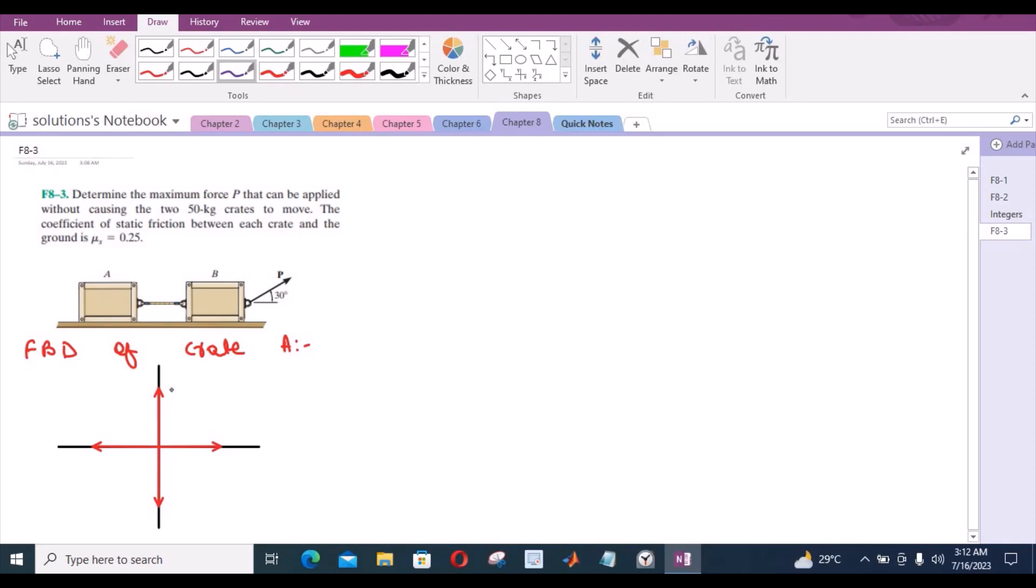Let's label them. This is NA, this right here is frictional force at crate A. Now, since they have said that we have to find the force P without causing the two crates to move, which means the system is in equilibrium. So we can apply the equations of equilibrium. So our first equation is sum of the forces in x direction equals to 0. I'm considering right hand side as positive.